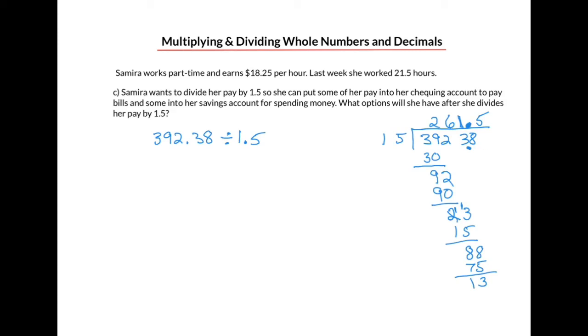Because we have a remainder, we can keep going. We can add a 0 at the end and bring that down. And then ask ourselves, how many times does 15 go into 130. It goes in there 8 times. So 8 times 15 is 120. And then we subtract, and end up with a remainder of 10.